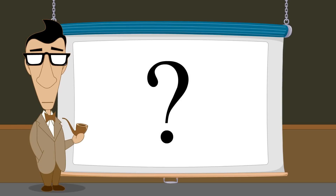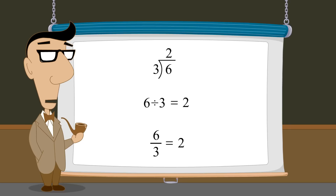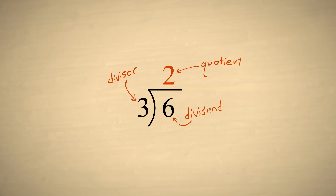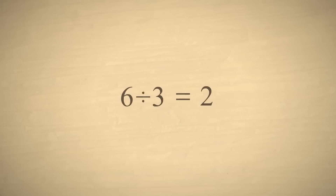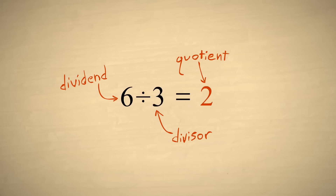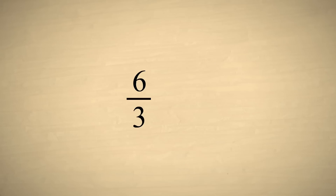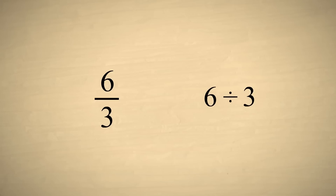But how do we divide fractions? Let's start by talking about different ways to write a division operation. You have probably seen long division problems written like this. The number to be divided is called the dividend, the number which divides the dividend is called the divisor, and the result is called the quotient. Division can also be written using a division sign, or as a fraction placing the dividend over the divisor. Both of these notations may also be used when dividing fractions.